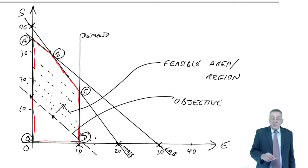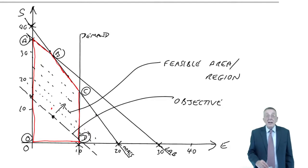We move it as far away as we can from zero, but keeping it parallel to that first line, and see how far away we can go without leaving the feasible area.